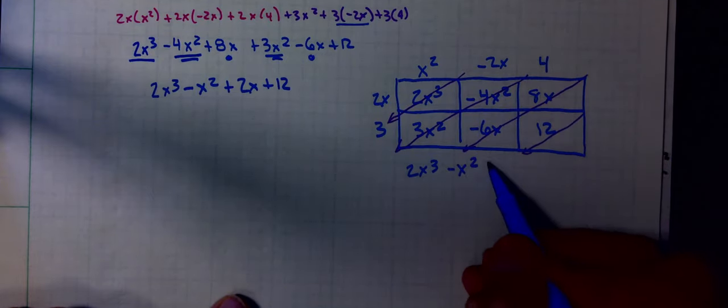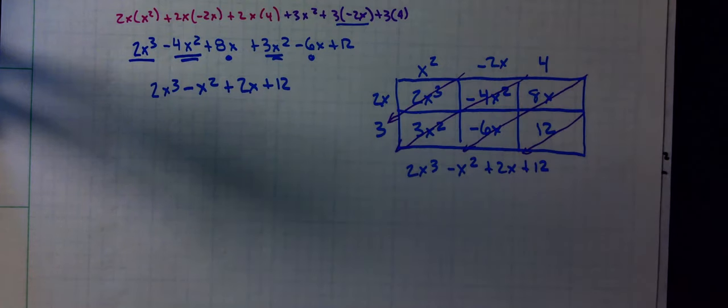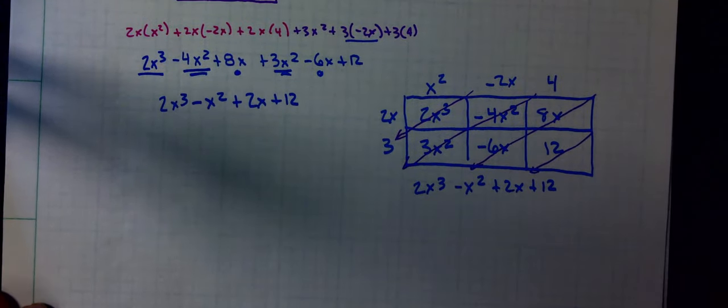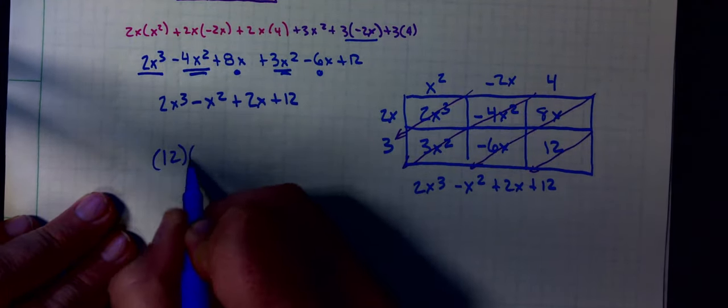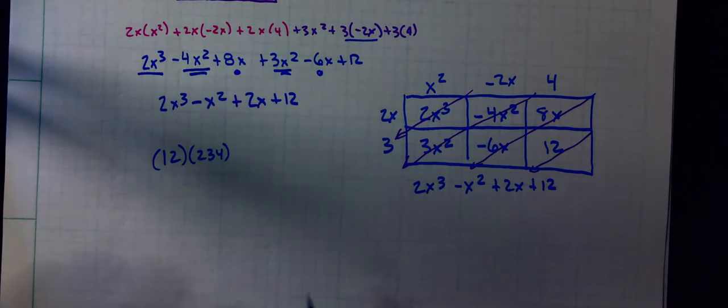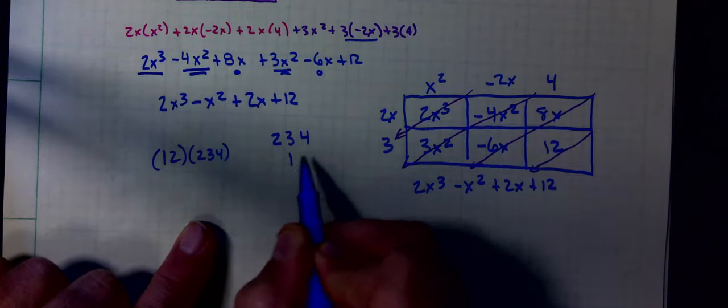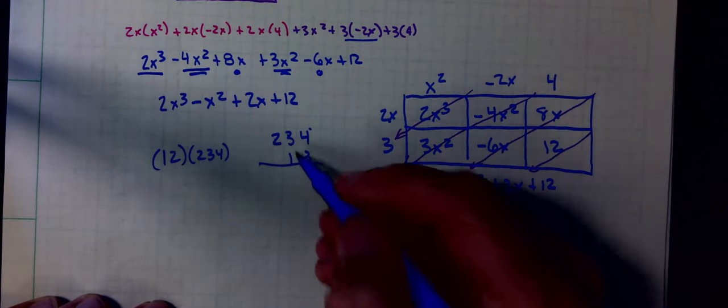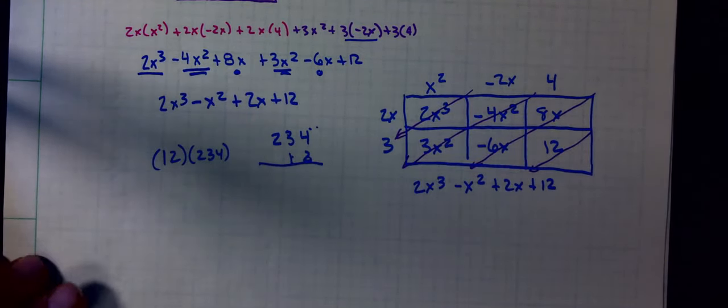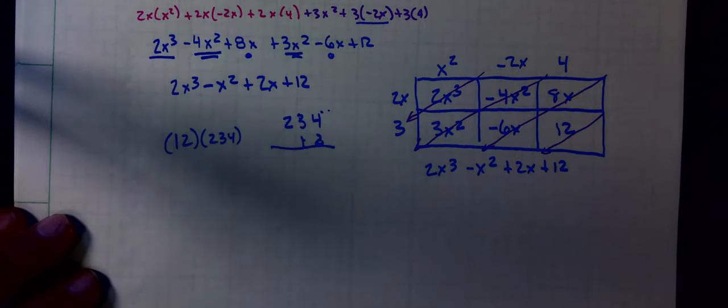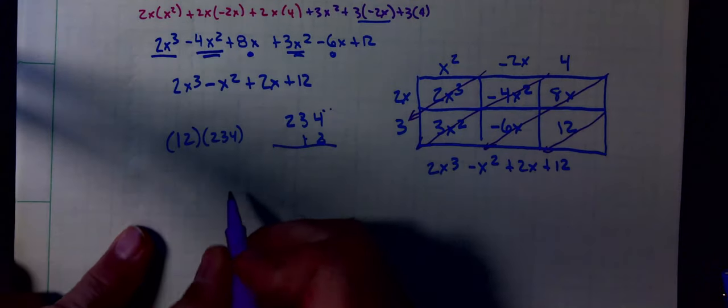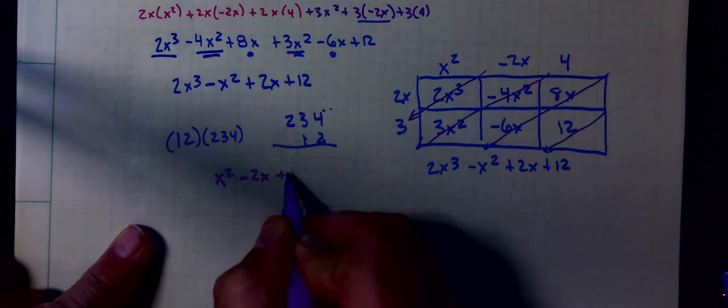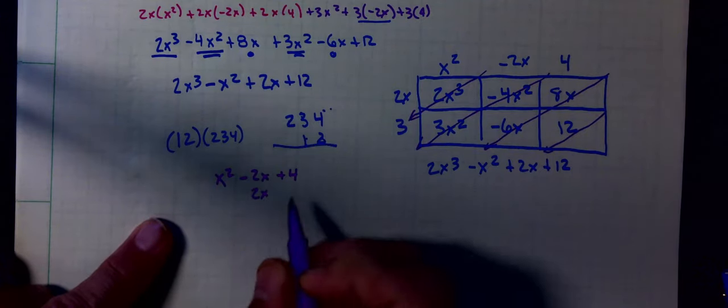And the last method that I can use for multiplying polynomials is just setting it up like regular multiplication. If I had this problem 12 times 34, the way I would write it to multiply is I write 2, 3, 4 for the 12. To end up doing the exact same thing, I'm going to write it out like this: x squared minus 2x plus 4. Underneath it I'm going to write the 2x plus 3.